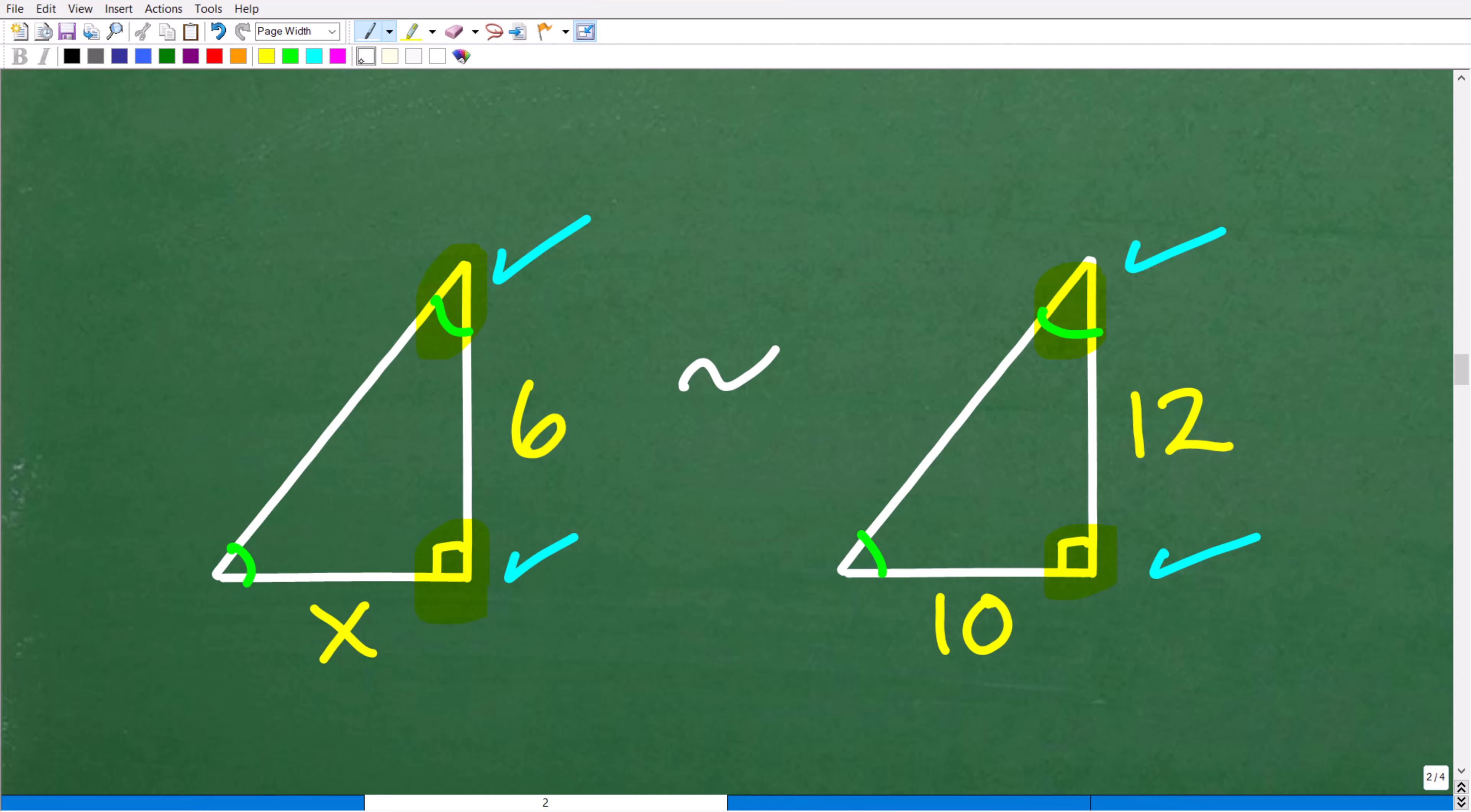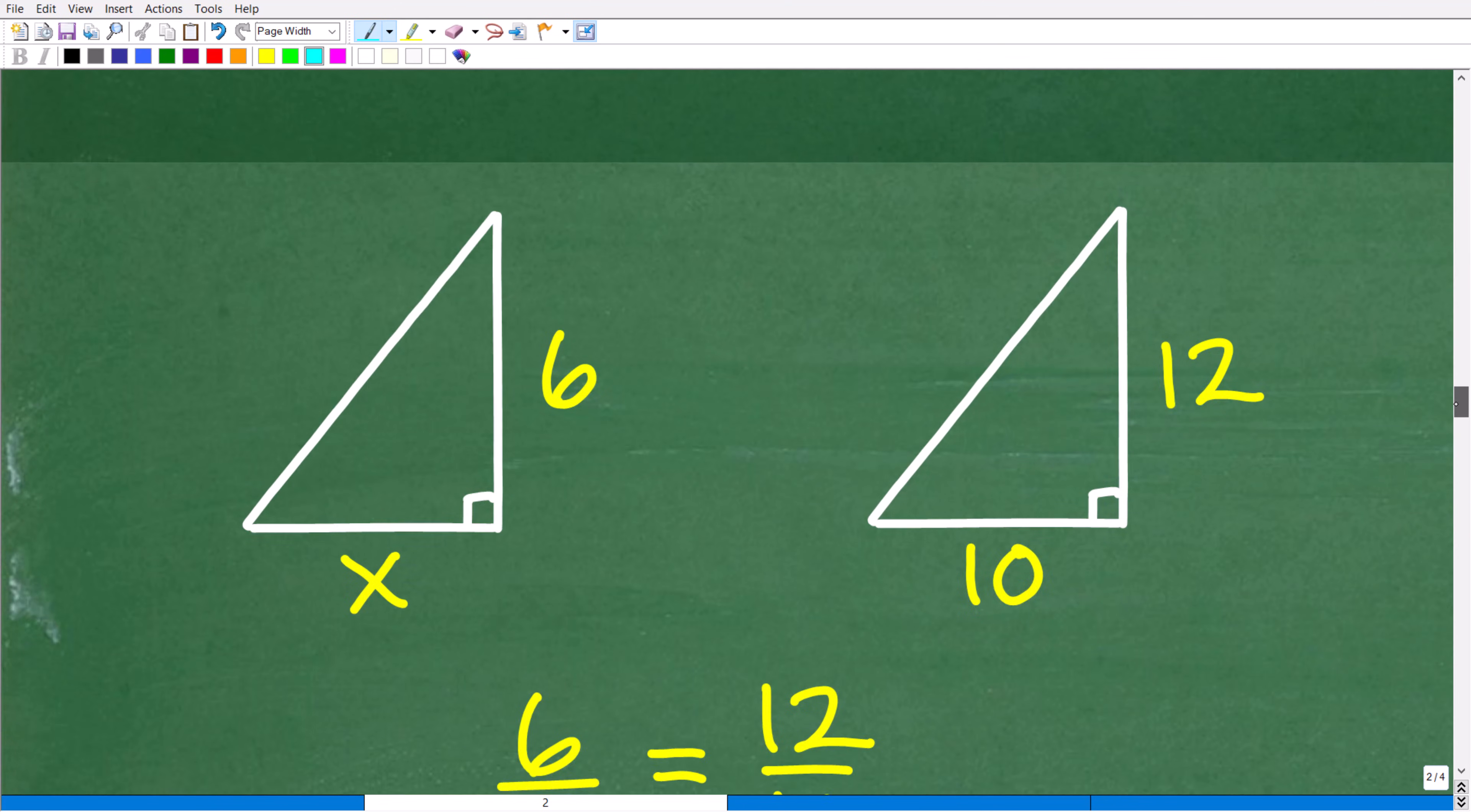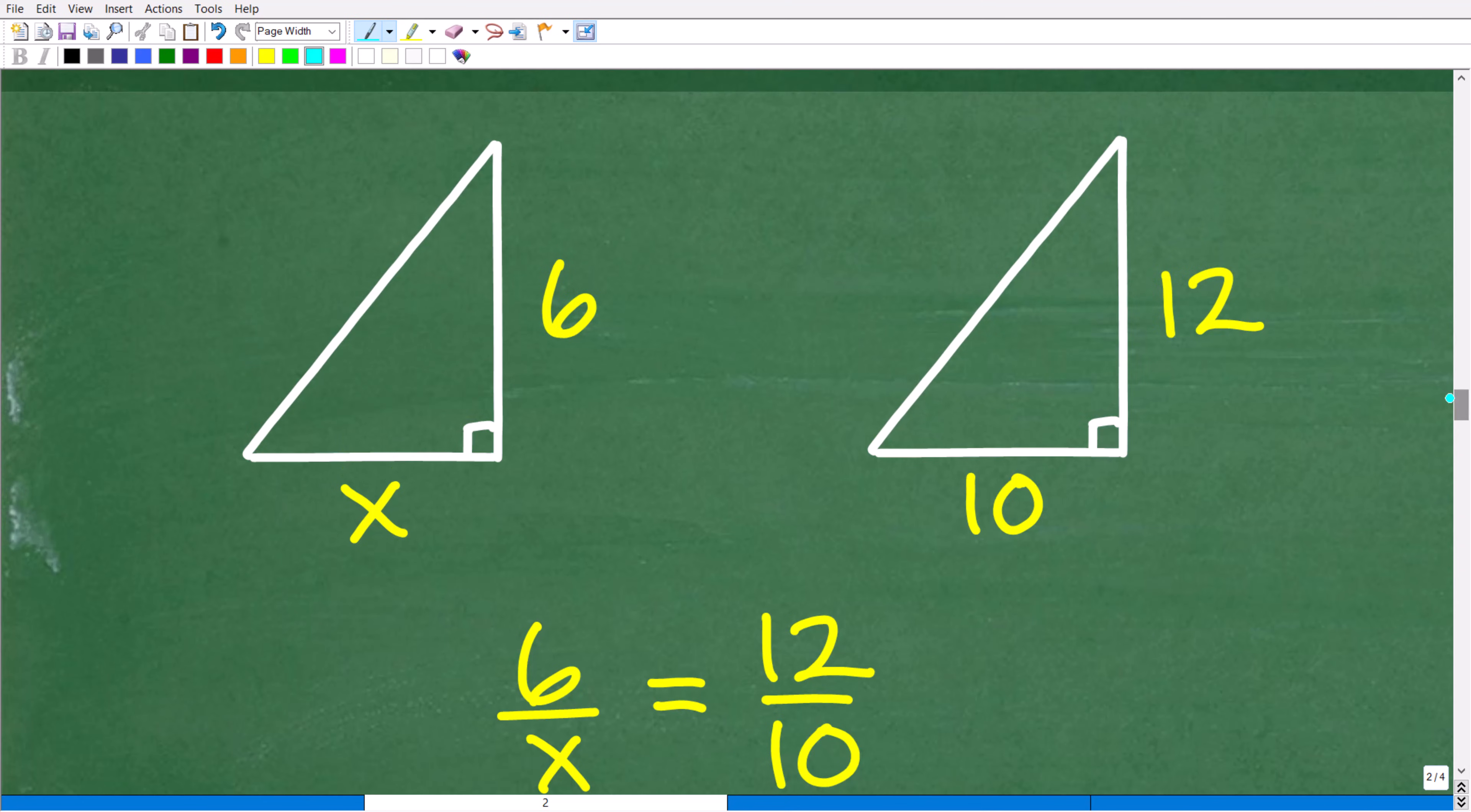So these are similar triangles. In other words, we could make a comparison to the sides. Now, there's different ways we can do this, but let's kind of do it this way. This side, this length, if I take that length and I divide it by this length, it's the same or equal to me taking this length and dividing it by this length. And what I want to do is set up a proportion here so I can solve for x. So I'm going to say 6 is to x, and that's going to be equal to as 12 is to 10. All right, so let's go ahead and set this up right now. So we're just going to make a comparison of the same side.